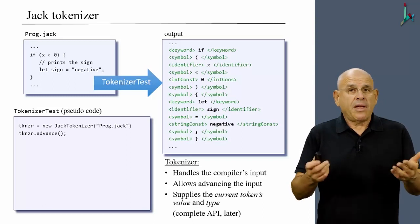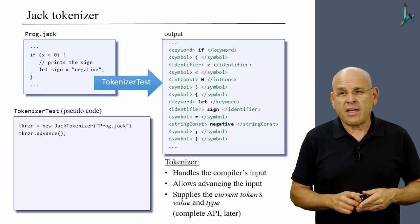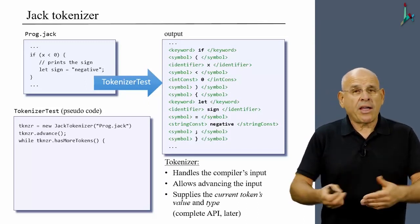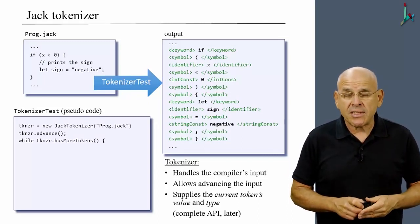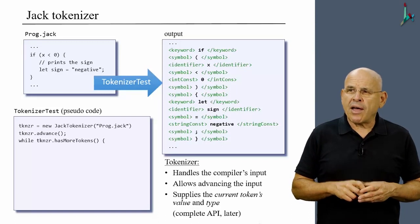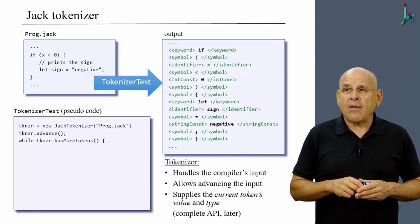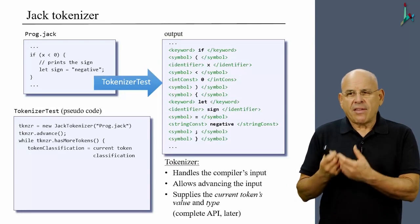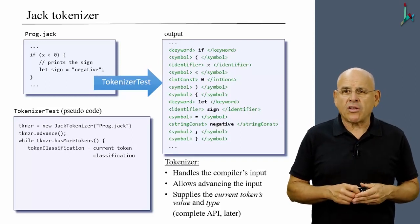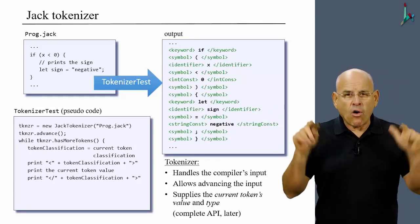In particular, we can tell this object to advance. And once we do this, the first token in this file will become the current token. And then we can enter a loop that says, as long as we have more tokens to process, here's what we want to do. Well, take a look at the desired output. And notice that we have to, in each line, output the classification of the token, and we have to do it twice. So I'm going to get the current token classification from the tokenizer and put it in some local variable that I call token classification.